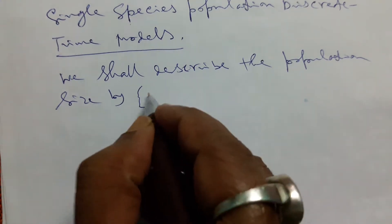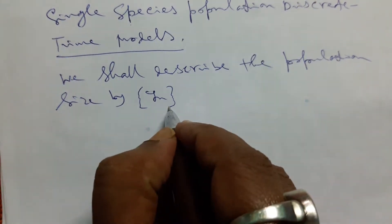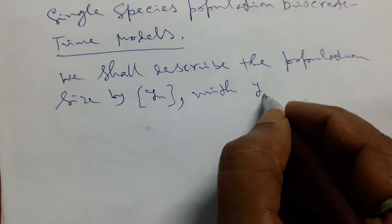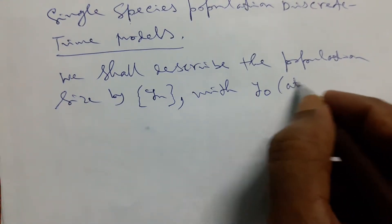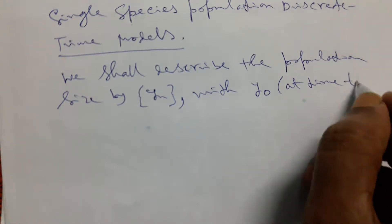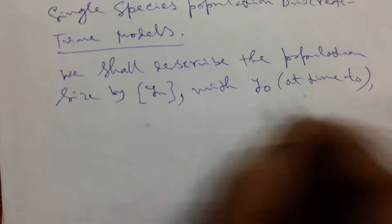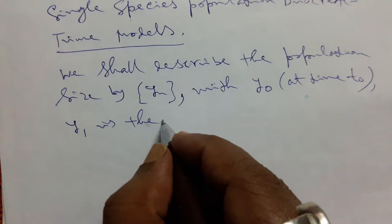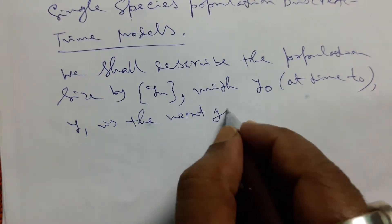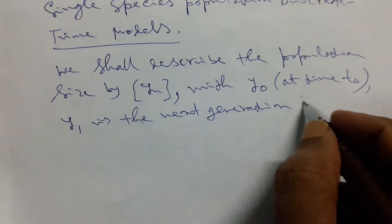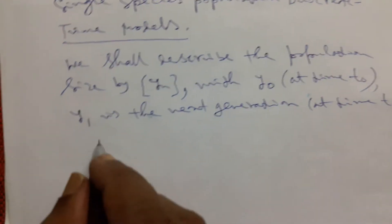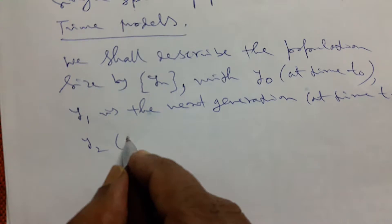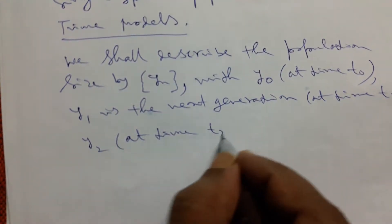We shall describe the population size by the sequence y_n with y_0 at time t_0, that means initial conditions. For the next generation that will be given by y_1 at time t_1, so y_2 at the next generation of y_1 at time t_2, and so on.